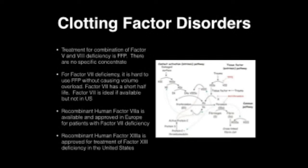For factor VII deficiency, it is hard to use FFP without causing volume overload. Factor VII has a short half-life, and factor VII concentrate is ideal if available, but it's not available in the U.S. Recombinant factor VIIa is available and approved in Europe for patients with factor VII deficiency. Recombinant human factor XIII is approved for treatment of factor XIII deficiency in the U.S.